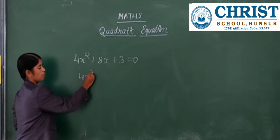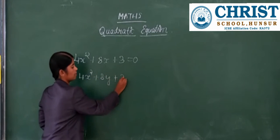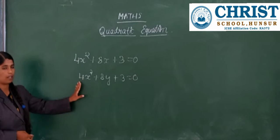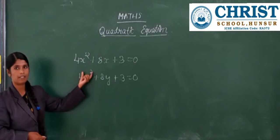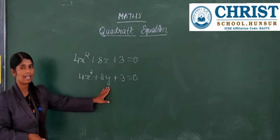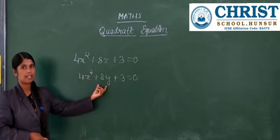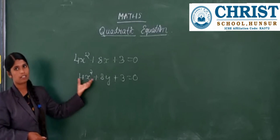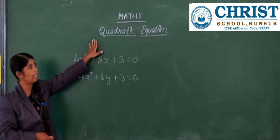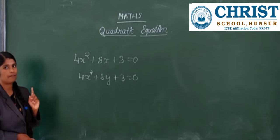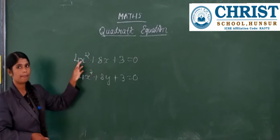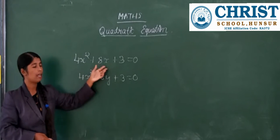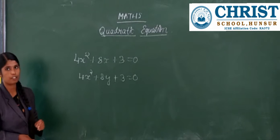Consider the equation 4x squared plus 8y plus 3 equals to 0. This is not a quadratic equation because, although the highest power is 2, it has two variables — here the variable is x and here the variable is y. So we cannot say this is a quadratic equation. There are two conditions it should fulfill to be called a quadratic equation. The first is that the equation should contain the same single variable.